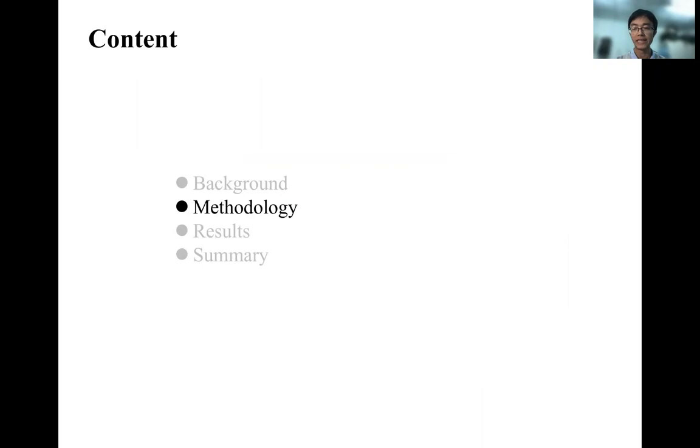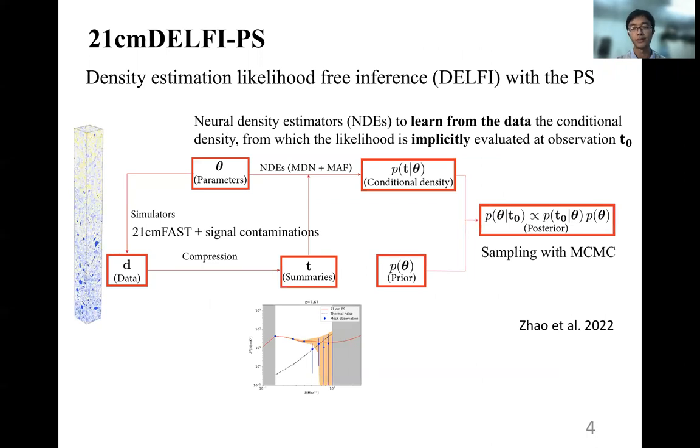Then we briefly introduce the methodology of our work. It's the Density Estimation Likelihood-Free Inference with the power spectrum, or 21cmDELFI-PS. Let's have a look at how it works. First, from the astrophysical parameters, we simulate the data with simulators like the 21cmFAST simulation. At the same time, we could add varied signal contaminations into the simulation.